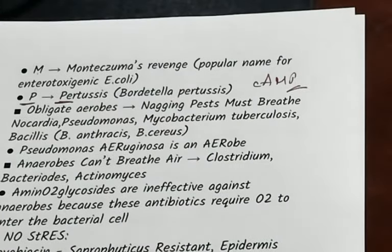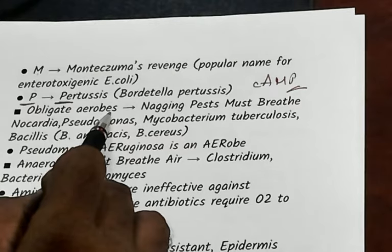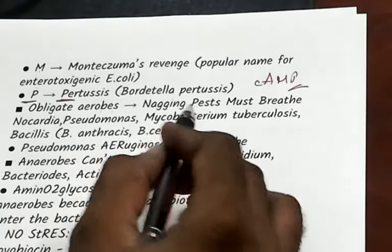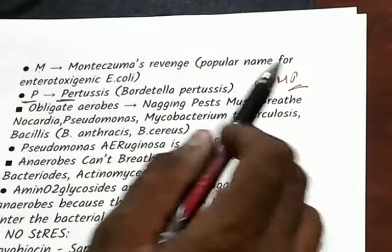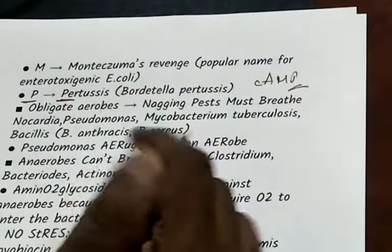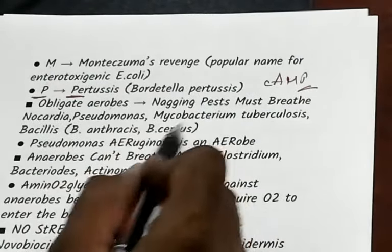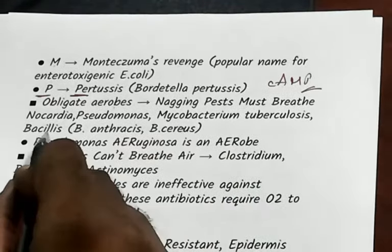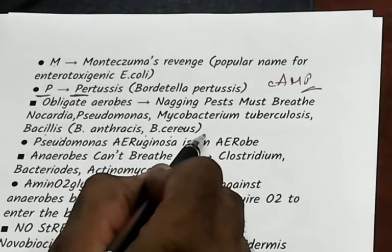Now, what are the obligate aerobes? Obligate aerobes — meaning without oxygen they cannot survive. One way to remember is 'these nagging pests must breathe': N is Nocardia, P is Pseudomonas, M is Mycobacterium tuberculosis, and B is Bacillus — Bacillus anthracis, Bacillus cereus. Without oxygen, they will die.